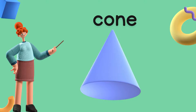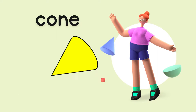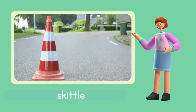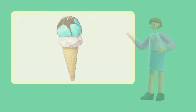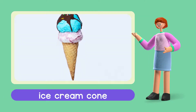Look at this shape carefully — say with me: Cone. C-O-N-E. Cone. Good job. This is an example of an object with the shape of a cone. A skittle has the shape of a cone. Ice cream cone also has the shape of a cone.